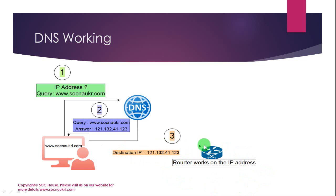Routers don't understand any domain name. There must be an IP address on the internet to forward the packet from one system to another. The DNS server changes the domain name to an IP address, and the IP address to a domain name when required.